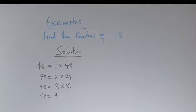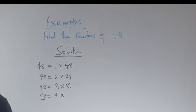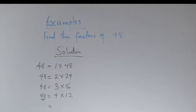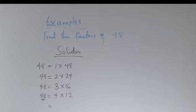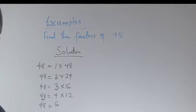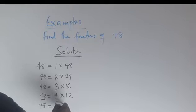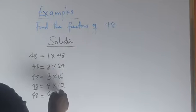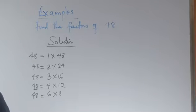4 can also divide 48, giving 4 multiplied by 12. Can 5 divide it? No, 5 cannot divide it. What about 6? For a number to be divisible by 6, it must be divisible by both 2 and 3. Since both 2 and 3 can divide 48, that means 6 can divide it. So 6 multiplied by 8 gives us 48.